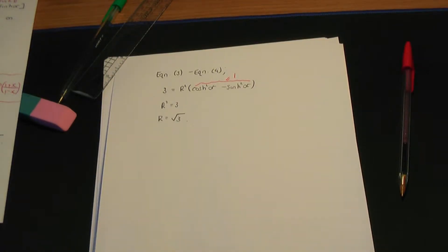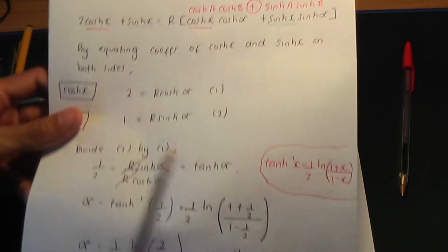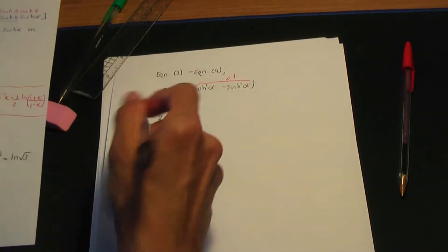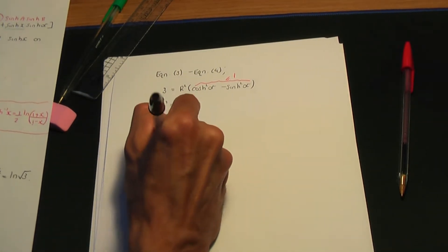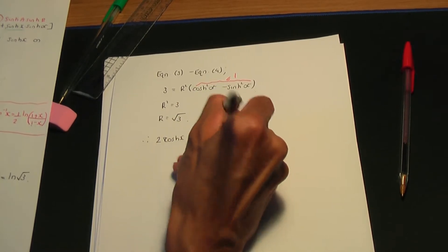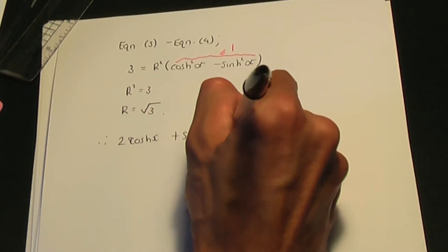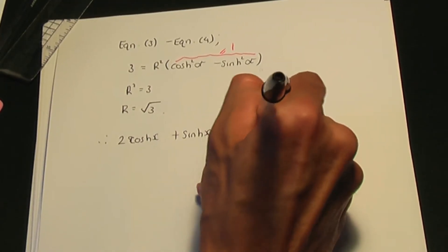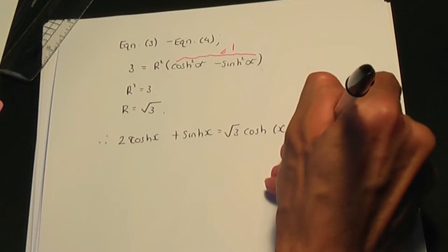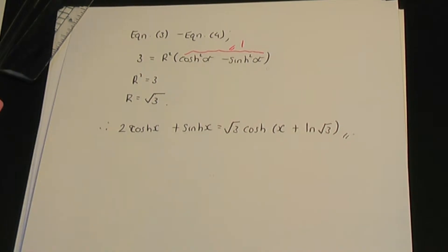Replacing r with √3 and alpha with ln√3 into the original expression: 2 hyperbolic cos x + hyperbolic sin x equals √3 hyperbolic cos(x + ln√3). That is the outcome for the first part of the problem.